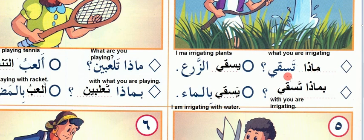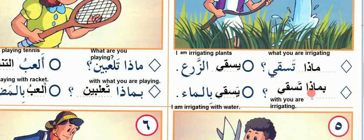Mazat Tasqee — what you are irrigating or what you are watering? Tasqee means watering. Yasqee Azarra — I am irrigating the plants, or I am watering the plants. Bimaza Tasqee — by what or with what you are irrigating? I am irrigating with water.